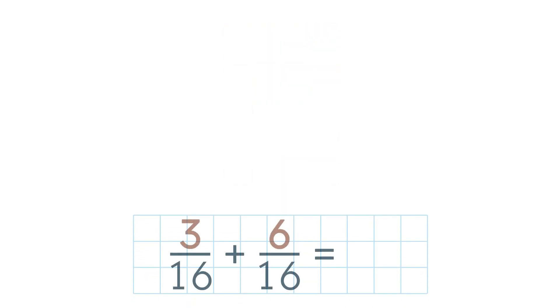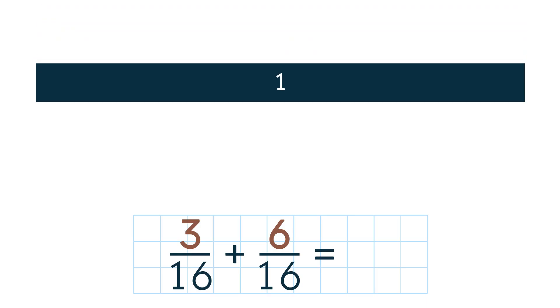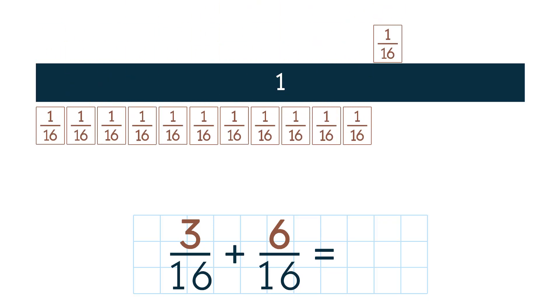Now let's solve the same problem using fraction strips. The 1 represents the entire chocolate bar. Each 16th piece represents 1 piece of the chocolate bar.